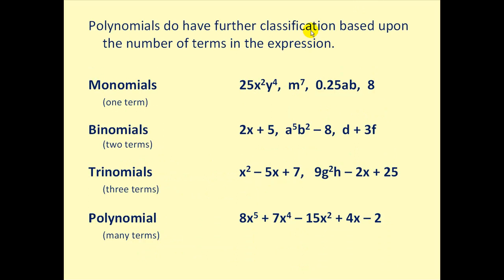Now polynomials do have further classification based upon the number of terms in the expression. For example, if we have monomials, mono means one, so we have one term. All of these are monomials.